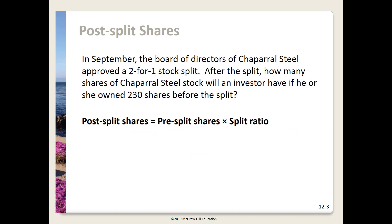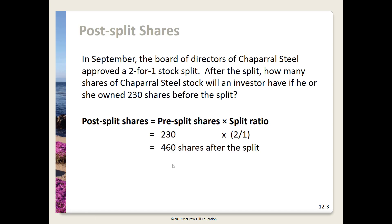In this next problem we're going to be calculating post-split shares. In September, the board of directors of Chaparral Steel approved a 2-for-1 stock split. After the split, how many shares will an investor have if they owned 230 shares before the split? Here's our formula: we plug in the 230 shares before the split and multiply by the split ratio of 2 over 1. When we take 230 times 2 over 1, we get 460 shares after the split.